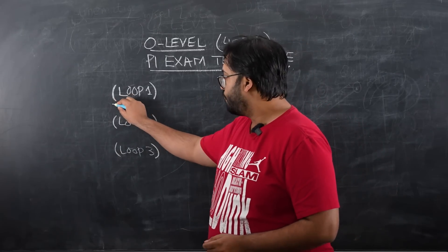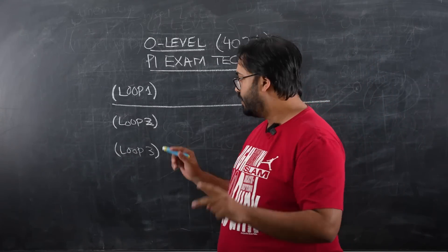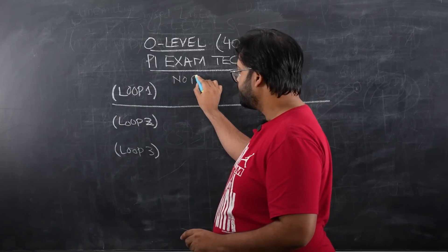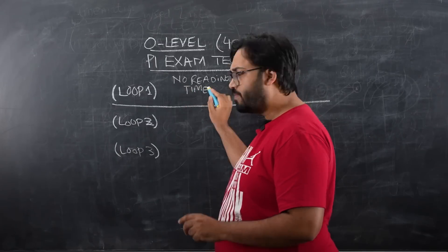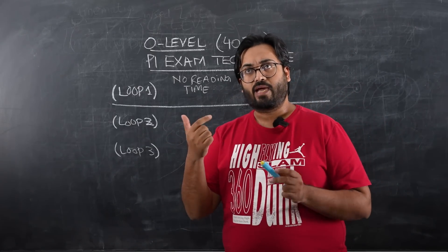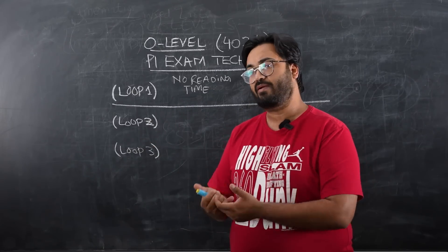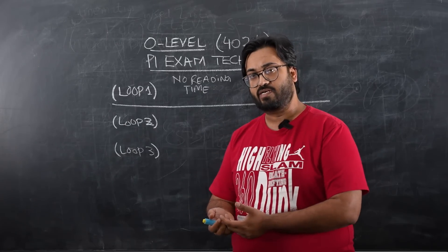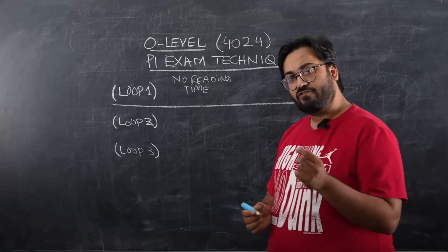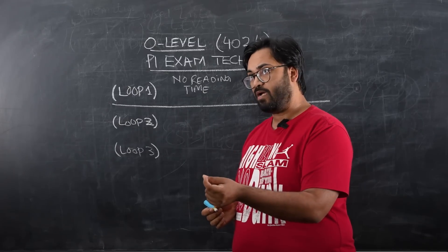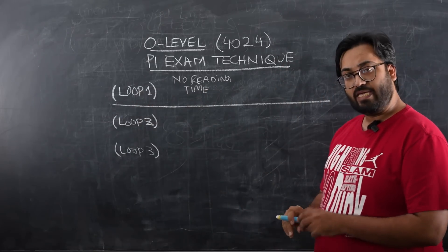In Loop 1, we are going to choose only those questions which are easy and do not have a reading time. These will include arithmetic questions, indices, factorization, simultaneous equations, solving algebraic expressions and their manipulation, standard form, and significant figures. You can also include proportionality, circle properties, symmetry, and polygons here if you're comfortable with them.